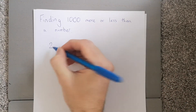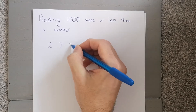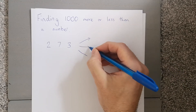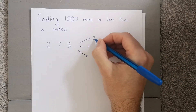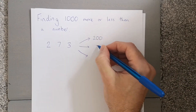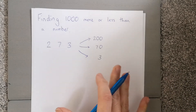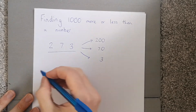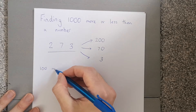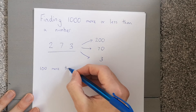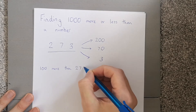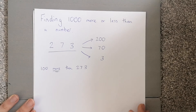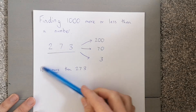If I have the number 273, what I want to do first is split that number so I know what I've got — that's 270 and 3. Now if I want to find 100 more than 273, the key thing is the word 'more' — 100 more than 273.